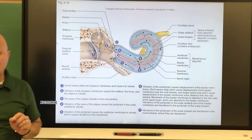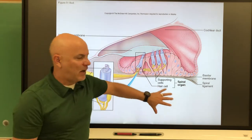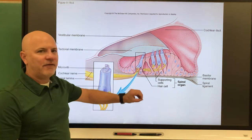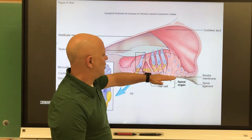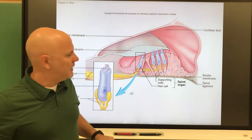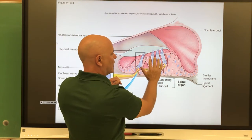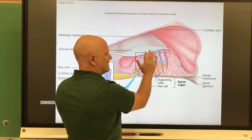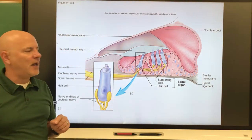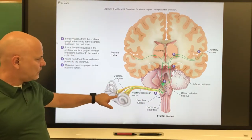When we vibrate the stapes, the stapes is going to vibrate the perilymph within the scala vestibuli and the scala tympani. That perilymph getting moved is going to cause vibrations in the basilar membrane. Basilar membrane movements are going to move the hair cells, and when they move up they're going to touch the tectorial membrane, which starts sending a signal.